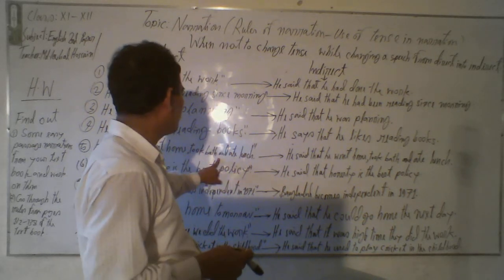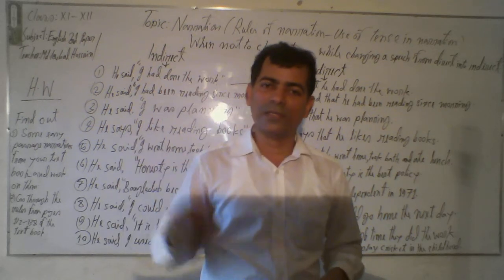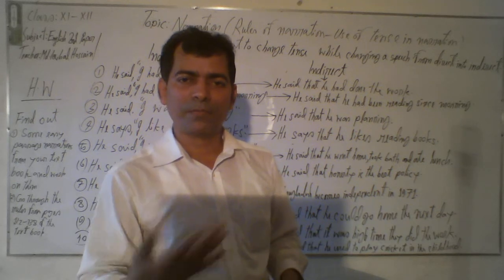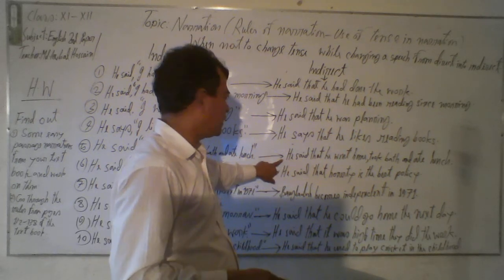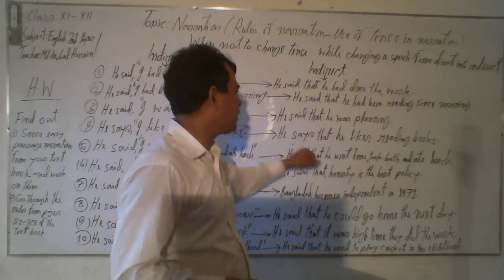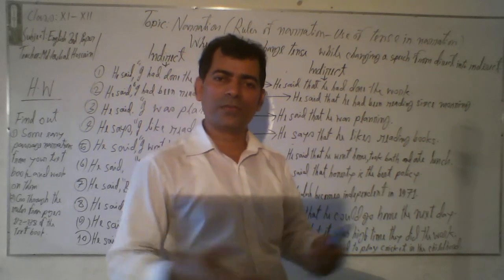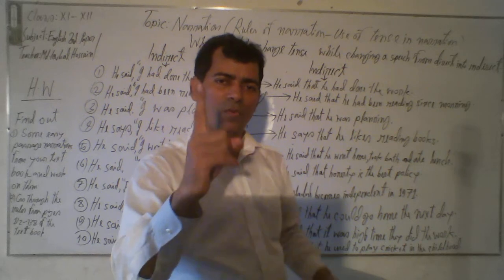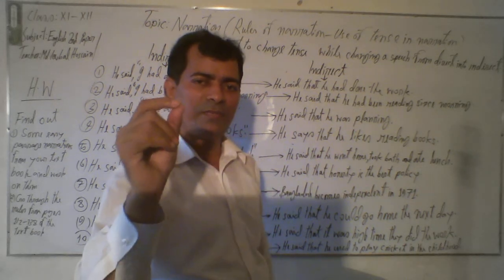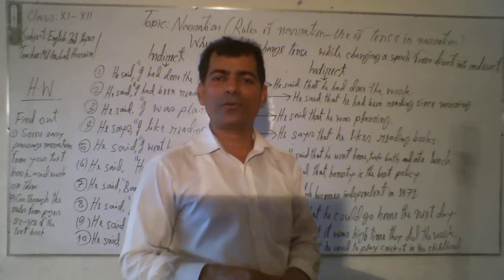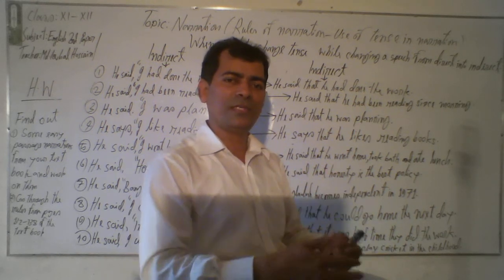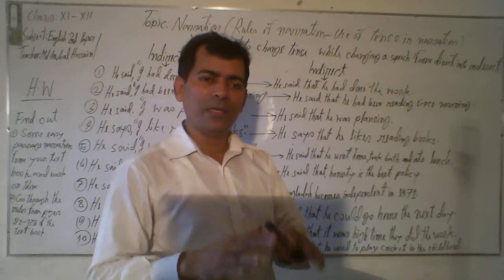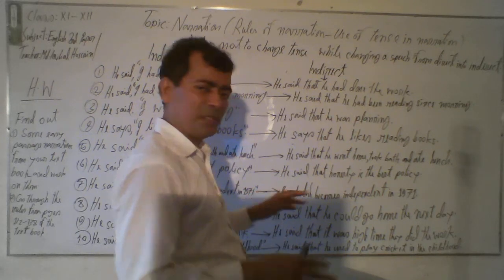Exception five: 'He said, I went home to bathe and ate lunch' — past indefinite tense. According to grammar rules, past indefinite tense changes to past perfect tense. But look at the indirect form: 'He said that he went home to bathe and ate lunch' — no change of tense. Why? Because when there are two or more verbs together in the past indefinite tense, you don't need to change the tense of the sentence. This is the rule of grammar.